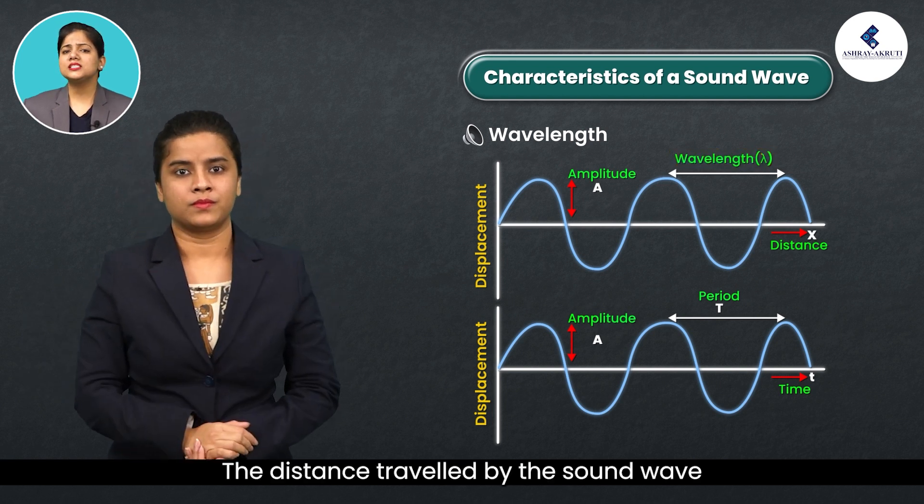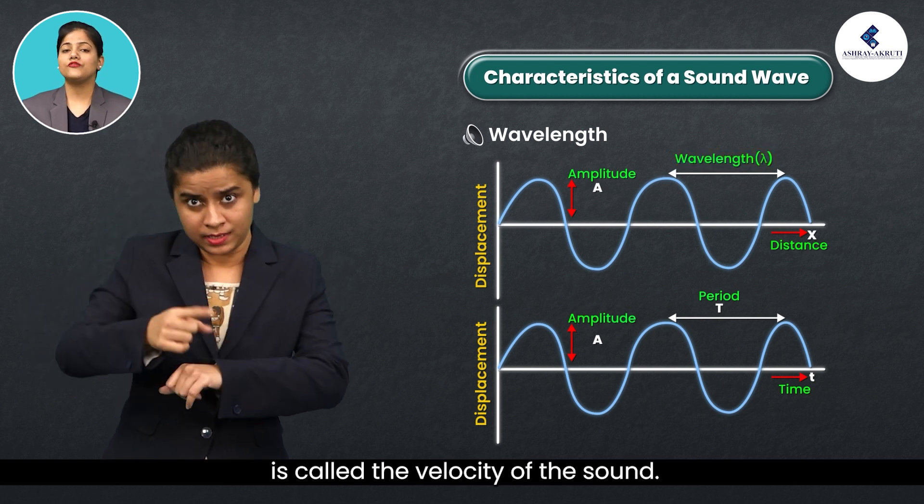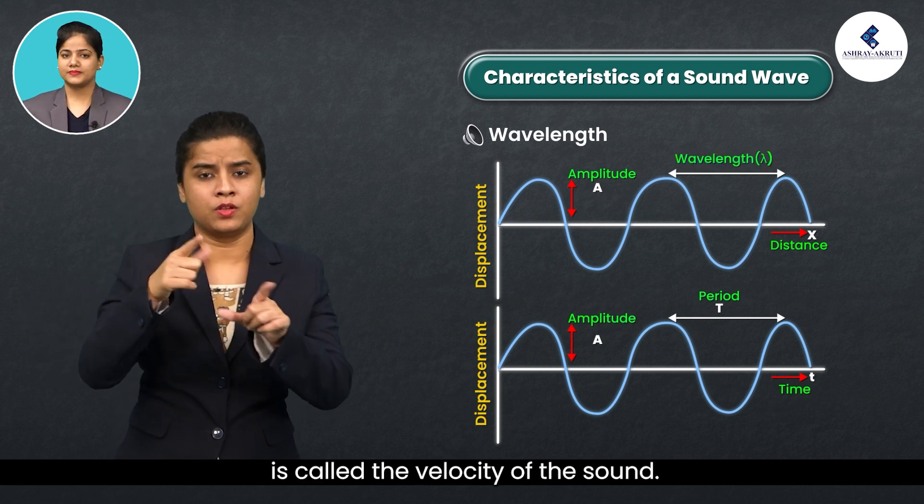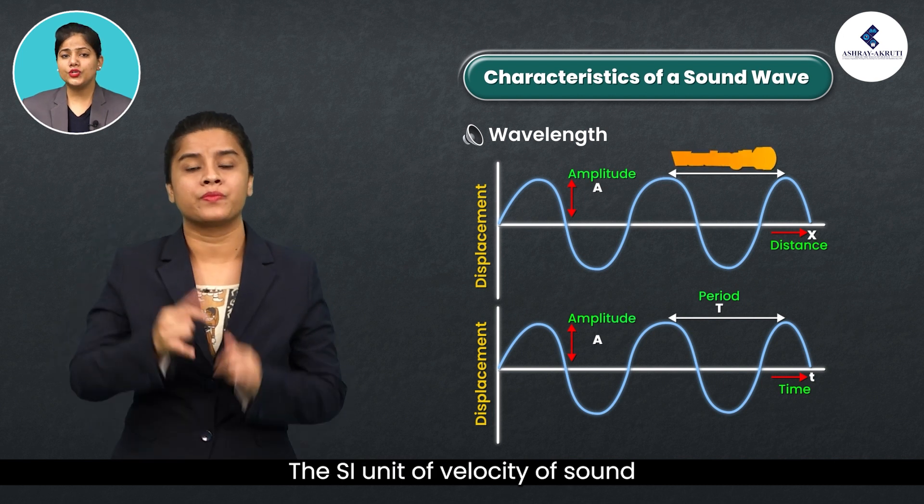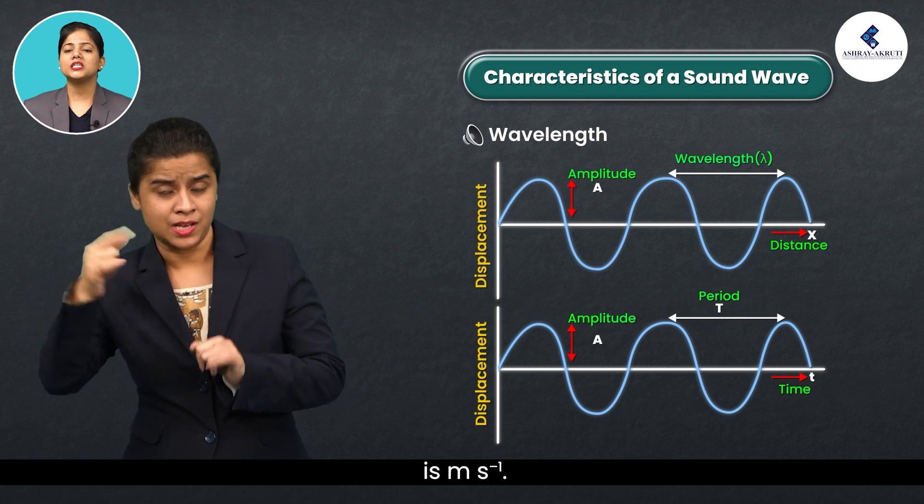The distance travelled by the sound wave in one second is called the velocity of the sound. The SI unit of velocity of sound is m s to the power minus 1.